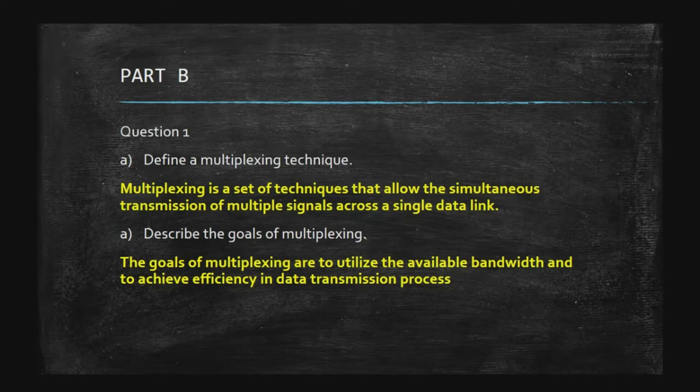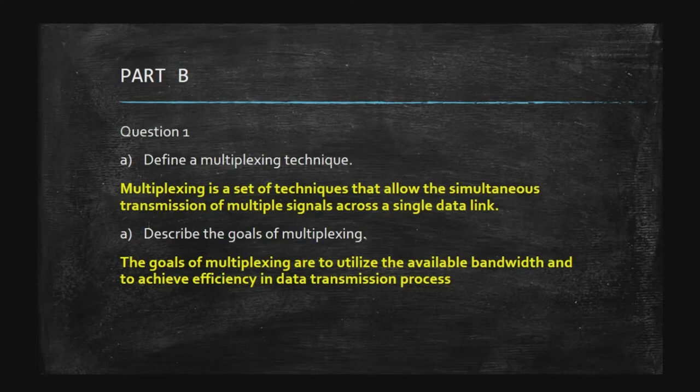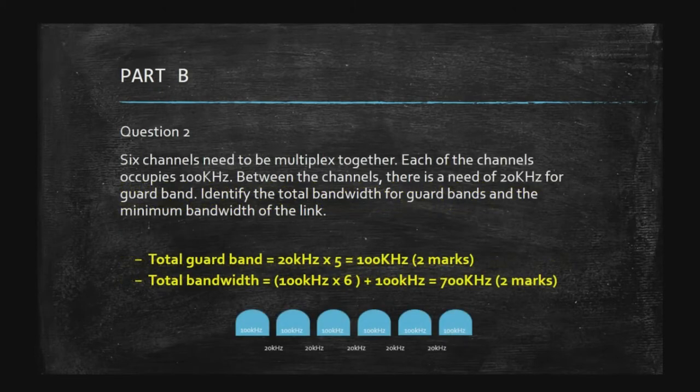Another goal is to reduce the cost of transmission. Instead of having multiple channels and multiple cables, we use the multiplexing technique to combine all the data from several sources into a single link and transmit the data to the receiver. So the goals are also the benefits and advantages of this technique in data communication.